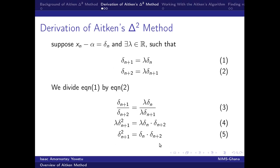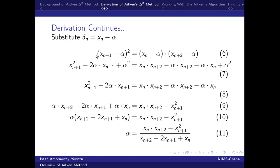But we know our delta n plus 1 here is the same as xn plus 1 minus alpha, and our delta n here is xn minus alpha, and our delta n plus 2 here is the same as xn plus 2 minus alpha. When we substitute them, then eventually we will happen to get equation 6.